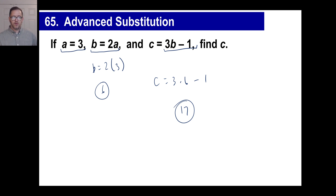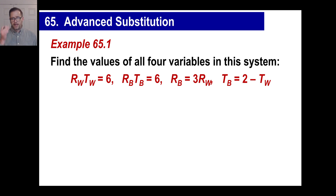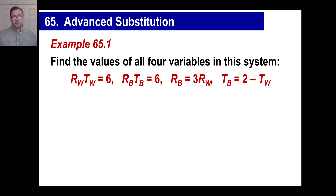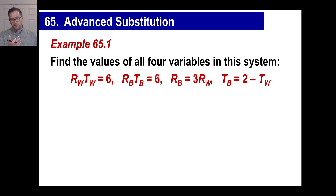Now if you remember those problems where you have rate, time, and distance, we're going to look at those today. So go ahead and write this down as an example. They say find the values of all four variables in this system. We have four variables: R sub W, T sub W, R sub B, and T sub B. What does rate times time equal? Distance, right?